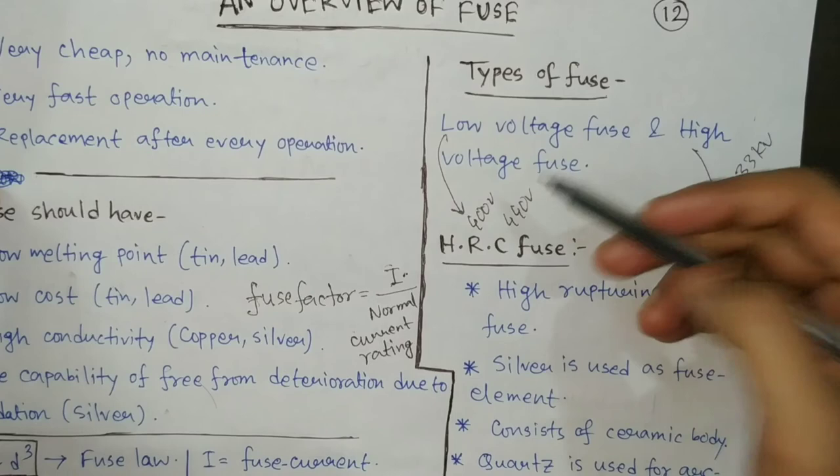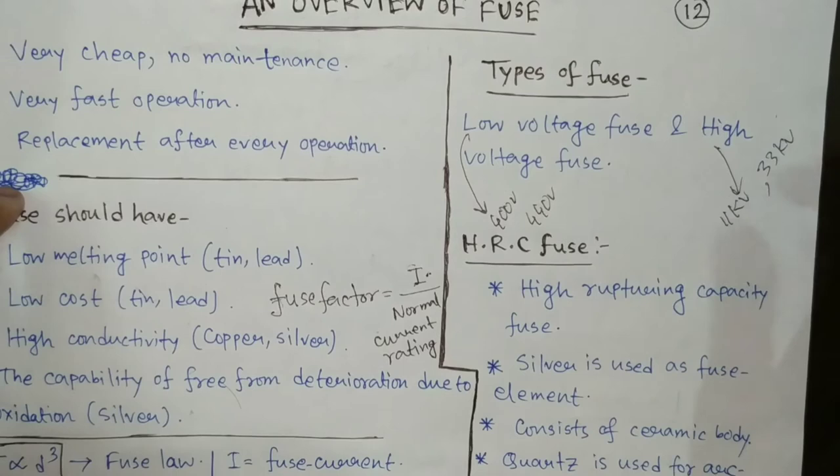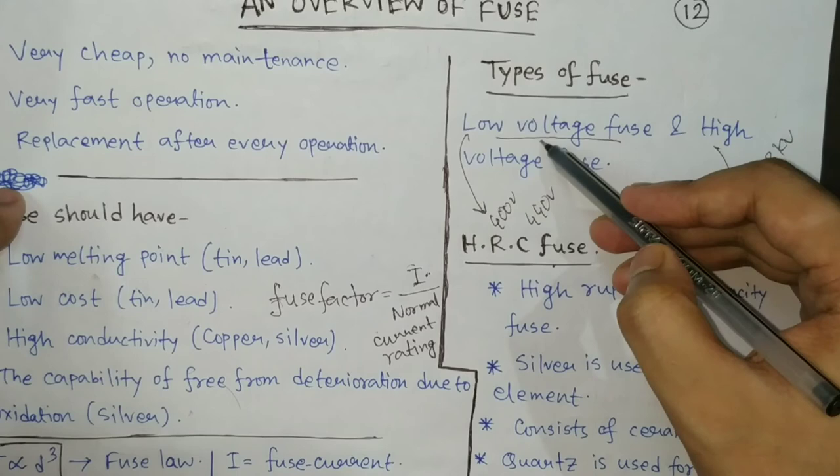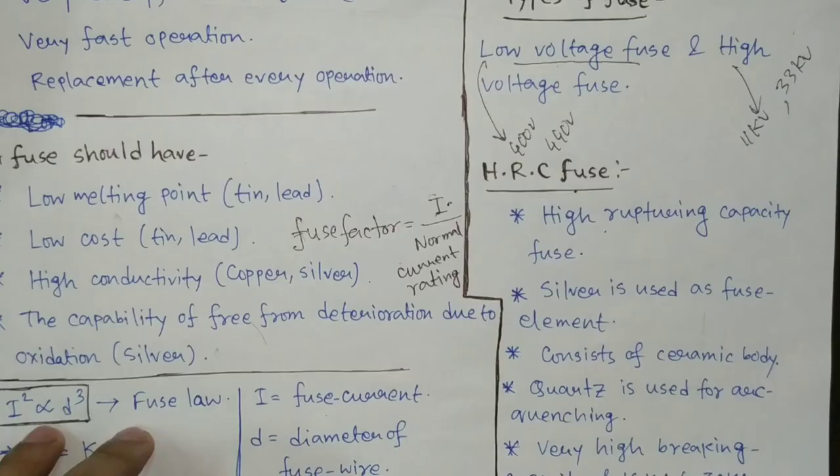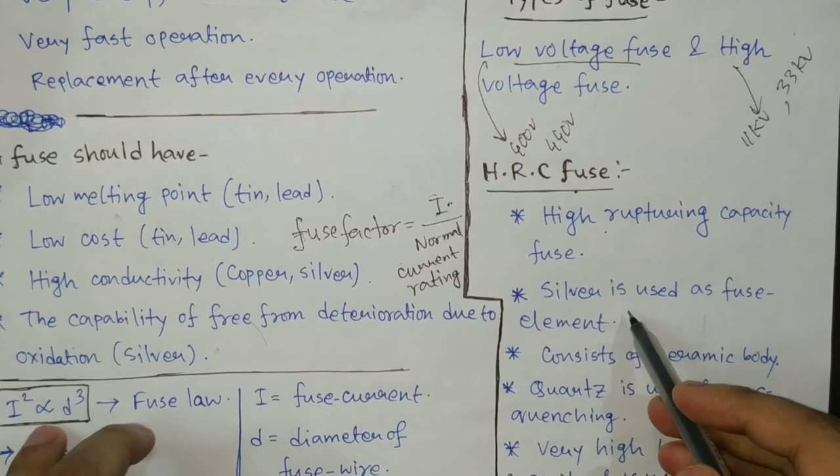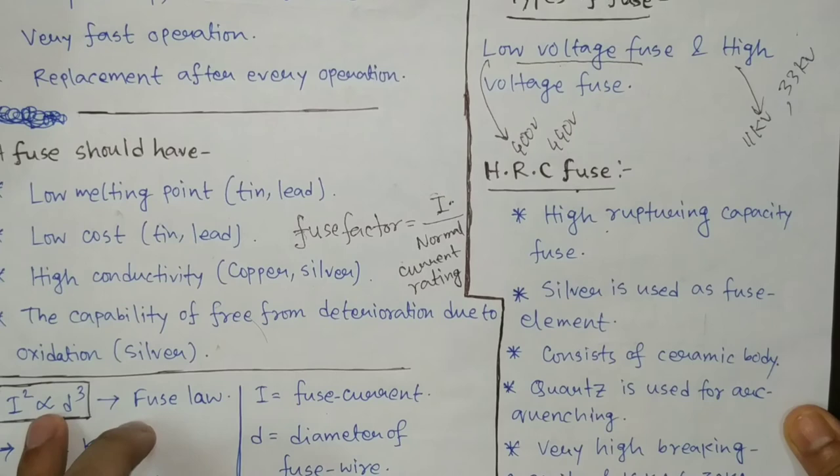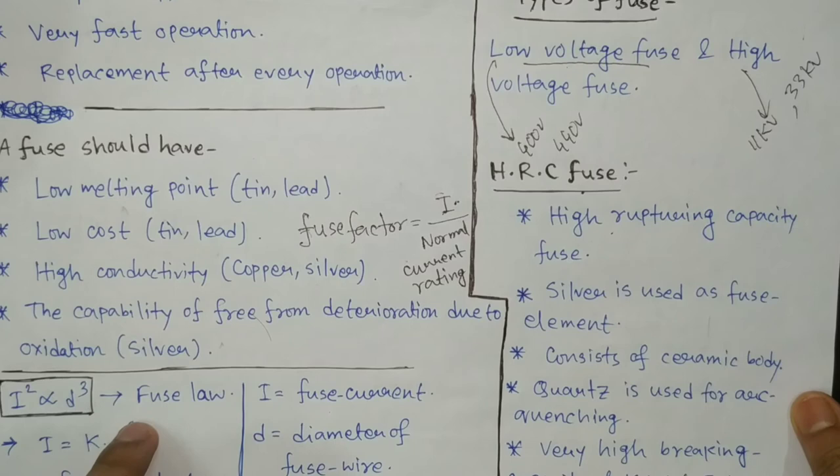HRC fuse is very common and well known. It comes under low voltage fuse. The full form is High Rupturing Capacity fuse. In case of HRC fuse, silver is the metal which is used as the fuse element. Silver has very high conductivity, so HRC fuse can handle a huge amount of current.